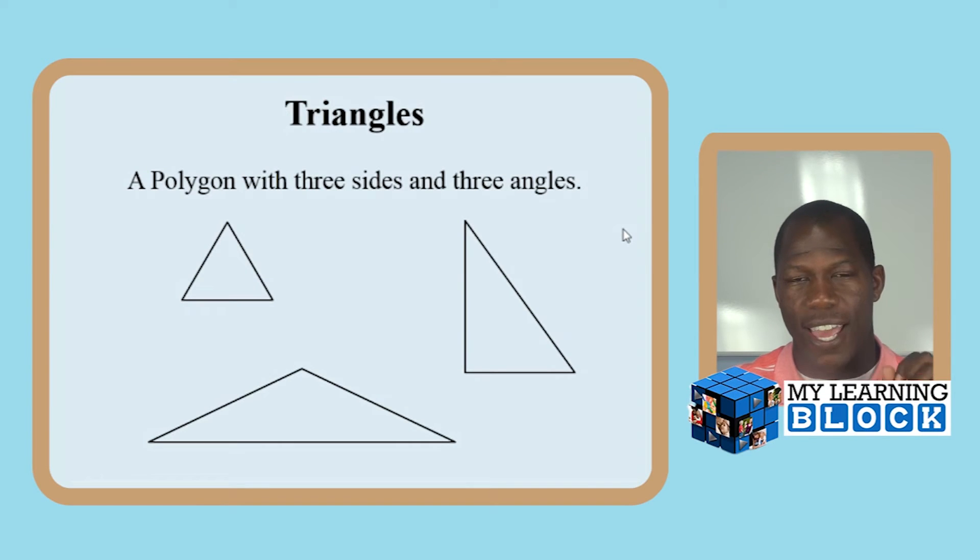Today we are going to work on polygons. You're going to be able to have the knowledge to help your child understand triangles. Triangles are polygons that have three sides and three angles, and the word tri means three, so that's another way to understand triangles.